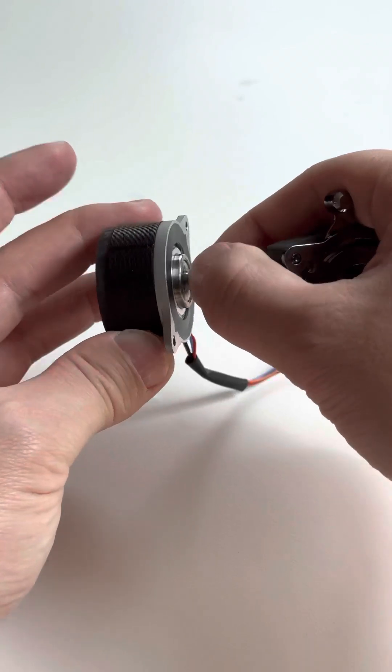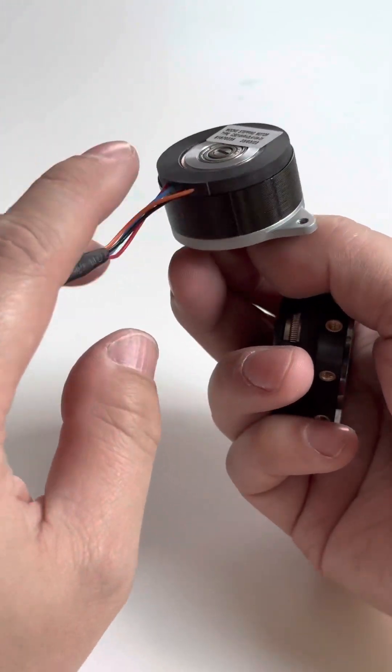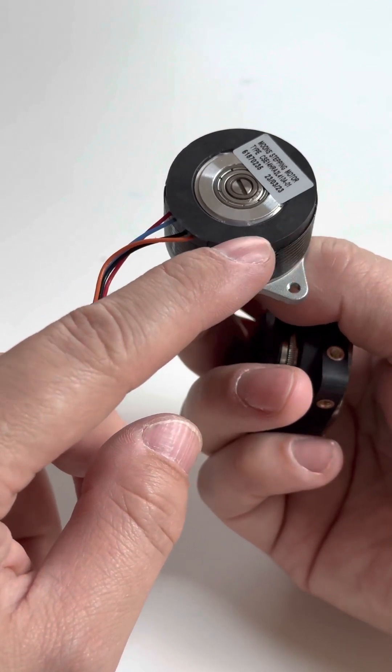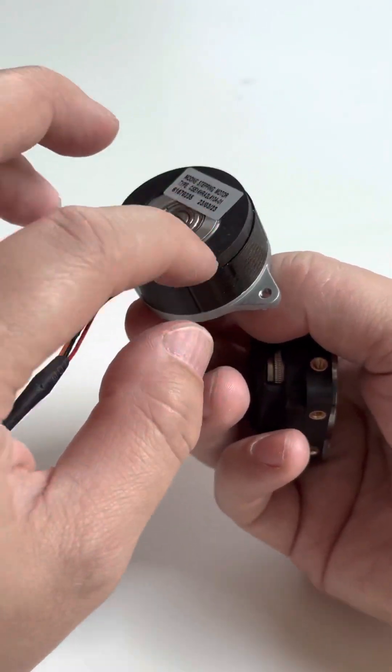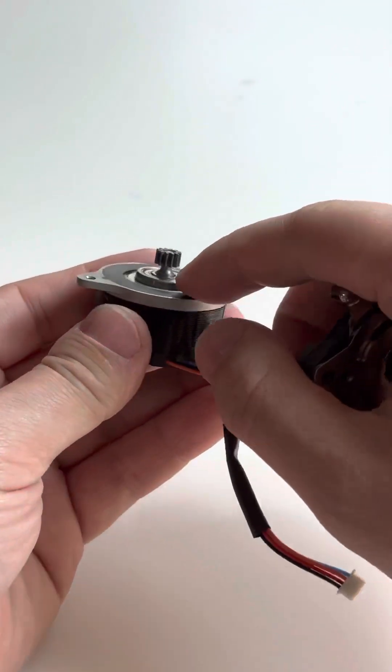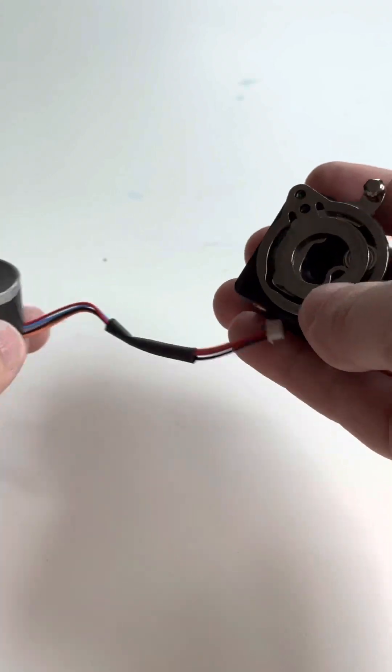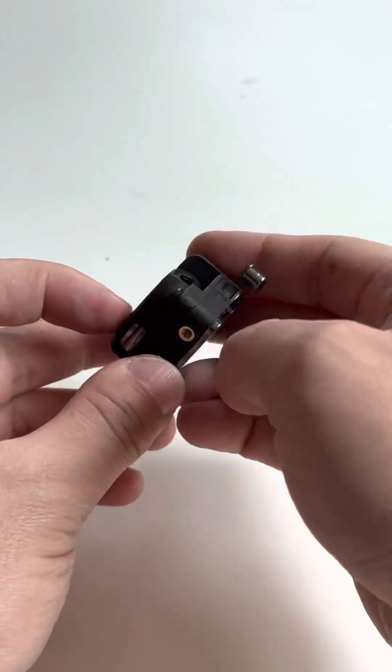But anyways, we've got a stepper motor here. Pretty typical stepper motor, except one interesting thing is on the back. It's some kind of glass-reinforced nylon or something. This back plate isn't all metal. And the bearing is sticking out the front a little bit, and I assume that's just to save space.